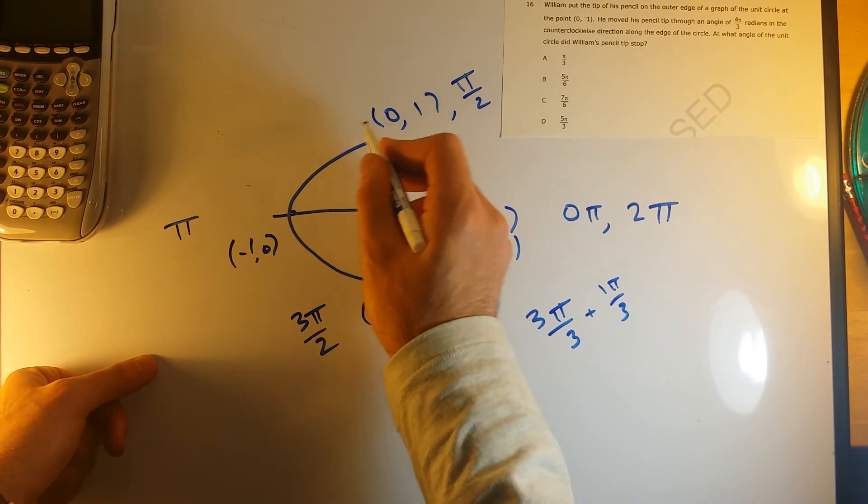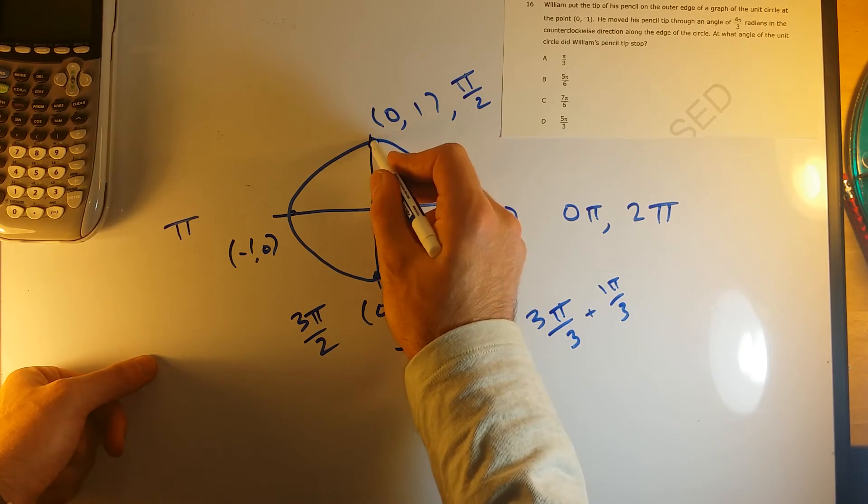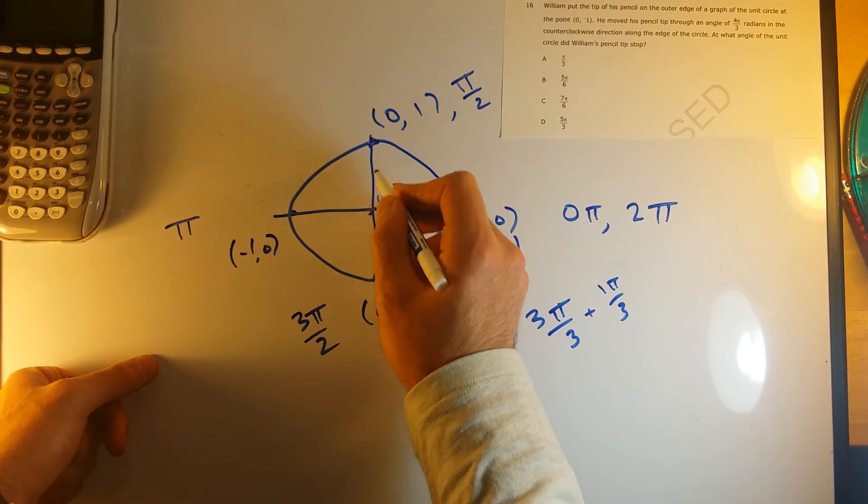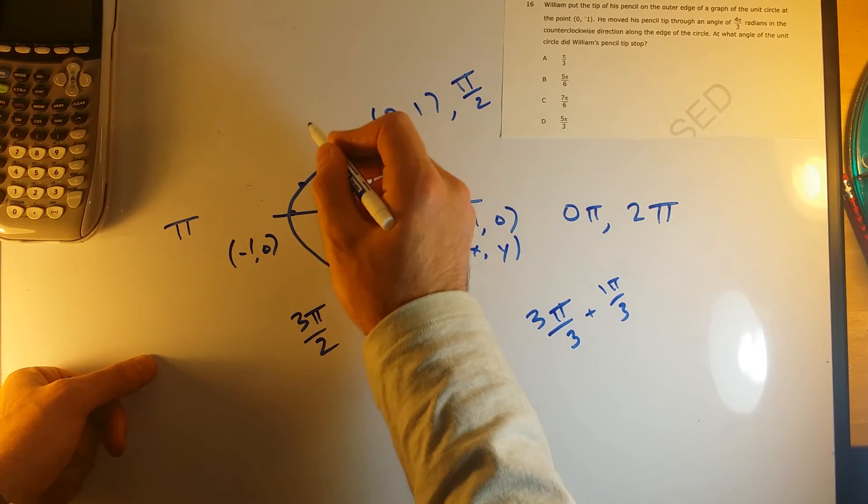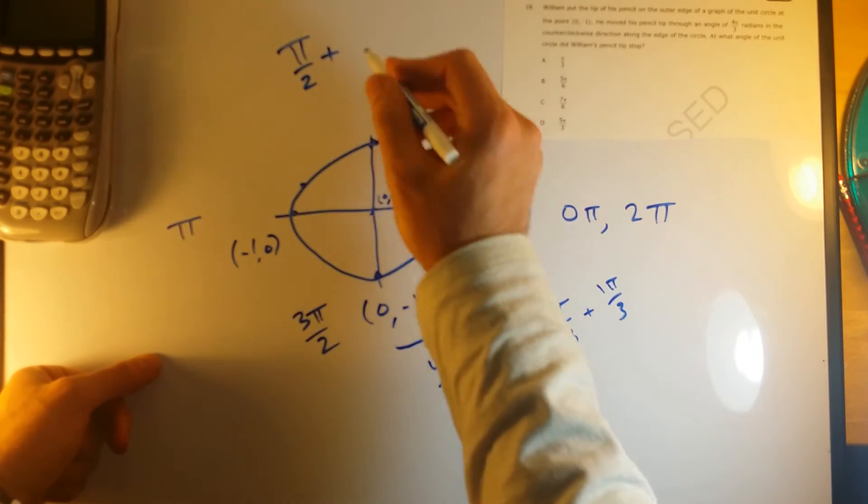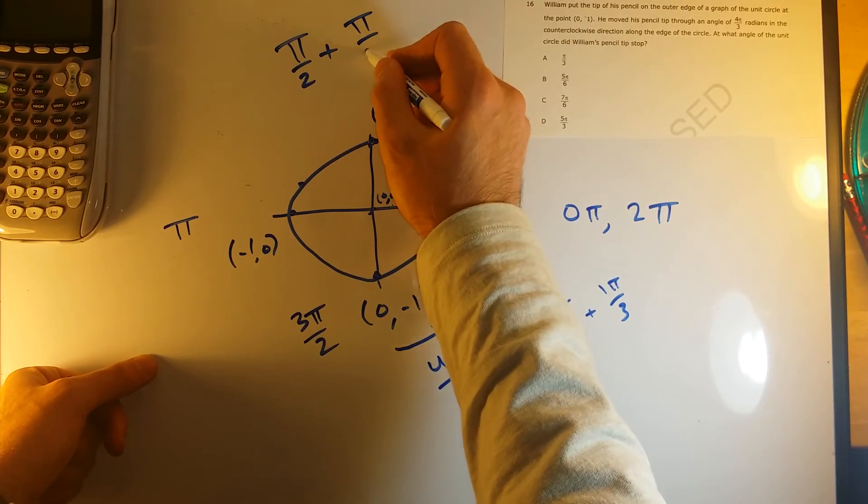So if I went another 1π over 3, so right here I'm at π over 2, but I'm going an extra 1π over 3 from there. So I'd end up somewhere right about here. It would just be basically π over 2 plus that π over 3 we still have left.